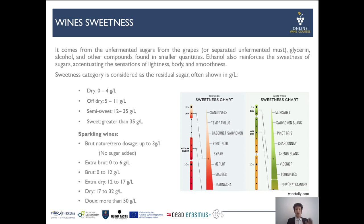Extra Dry is a range of 12–17 g/L of residual sugar. 'Dry' for sparkling wine — take care — is definitely not analytically dry; it sits between 17–32 g/L. Demi-sec, meaning mild, is higher than 50 g/L. The semi-sweet category sits between 32 and 50 g/L.